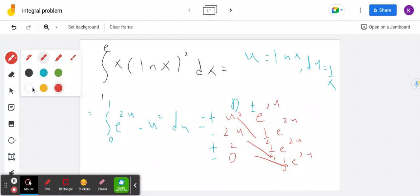And so what my answer would look like is I get u squared over 2 e to the 2u. And then I would get minus u over 2 e to the 2u.